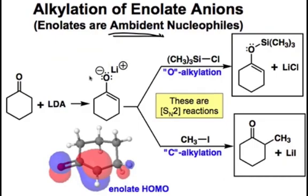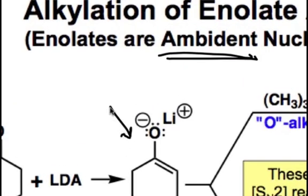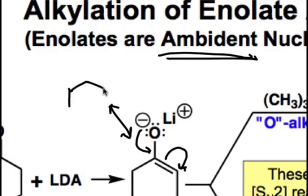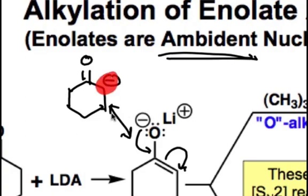Enolates are ambident nucleophiles, which means that they're reactive at more than one position. If we imagine drawing a resonance structure of the enolate shown here, we can imagine that the enolate is nucleophilic not just on carbon, but also on oxygen. By pushing electrons from the oxygen onto carbon and breaking the pi bond in an n-to-pi-star type interaction, we generate a structure that looks simply like the deprotonated form of the carbonyl group. These two resonance structures show us that the enolate can be nucleophilic either on carbon, as this resonance structure shows, or on oxygen, as the original resonance structure shows.